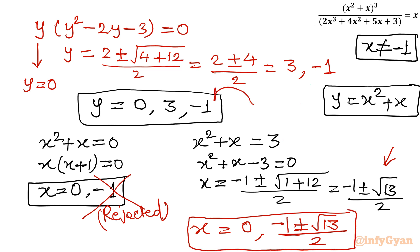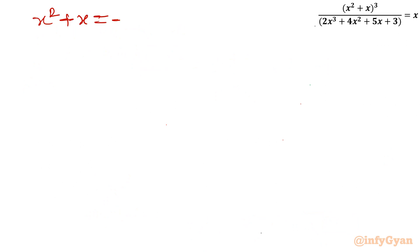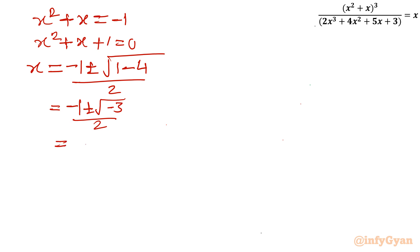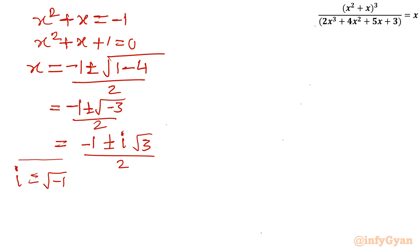Now solving the last equation with y = -1: x² + x = -1, which gives x² + x + 1 = 0. Applying the quadratic formula: x = (-1 ± √(1 - 4)) / 2 = (-1 ± √(-3)) / 2 = (-1 ± i√3) / 2. Since i = √(-1), this solution is complex, so we reject it.